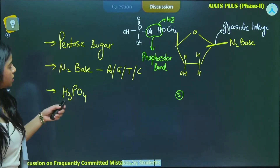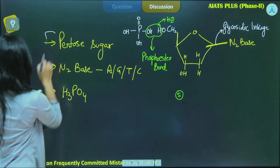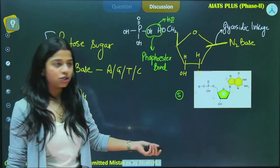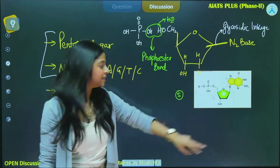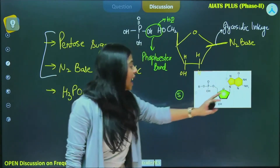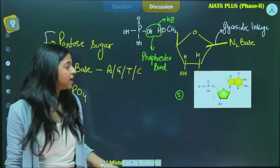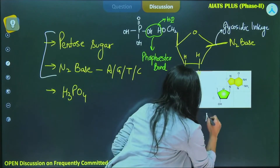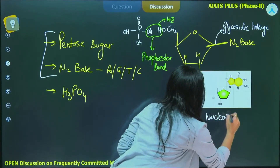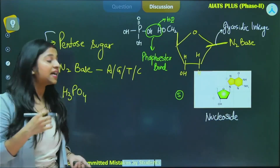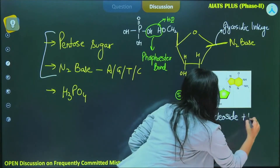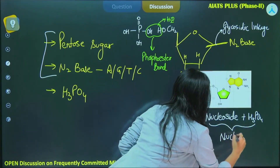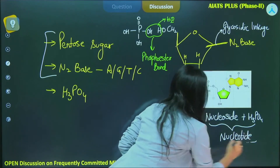If the phosphate group is not attached, and we only have the first two components — the pentose sugar and the nitrogenous base — it is called a nucleoside. This is the whole structure of a nucleotide: the pentose sugar, the nitrogenous base, and the phosphate group. If I remove the phosphate group, it becomes a nucleoside. As soon as the nucleoside attaches to a phosphate group, it becomes a nucleotide.